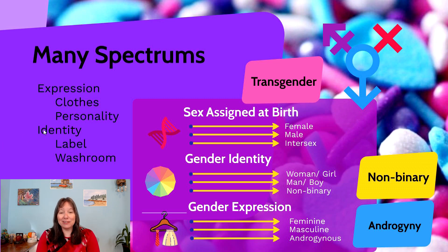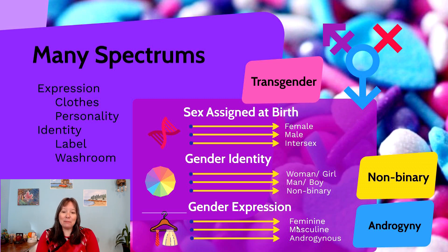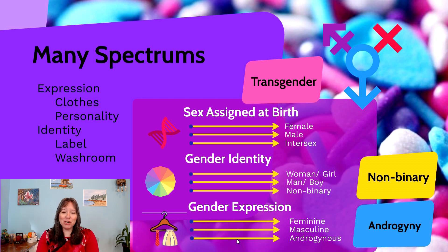There are now lots of different spectrums to consider. When we think about biological sex or sex assigned at birth, there are three possibilities: female, male, and intersex. When we talk about gender identity, you may identify as a woman, a man, or non-binary. In terms of gender expression — your attitudes, interests, and skills — you may be more feminine, more masculine, or androgynous. These can be thought of as sliding scales: you could be anywhere on any of them, and you could be somewhere across multiple spectrums at once.